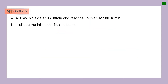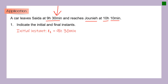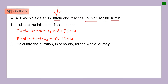Let's solve an application. A car leaves Sidon at 9 hours 30 minutes and reaches Junieh at 10 hours and 10 minutes. Indicate the initial and final instants. The initial instant t1 is 9 hours 30 minutes, and the final instant t2 is 10 hours and 10 minutes. Part 2: calculate the duration in seconds for the whole journey.